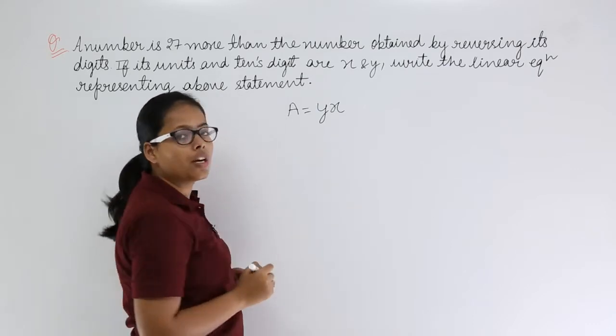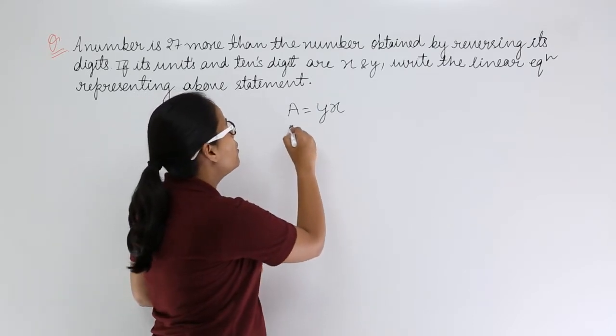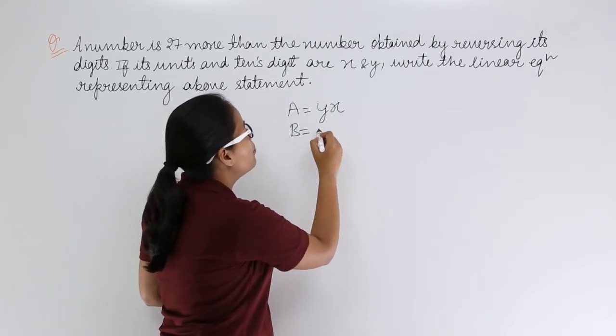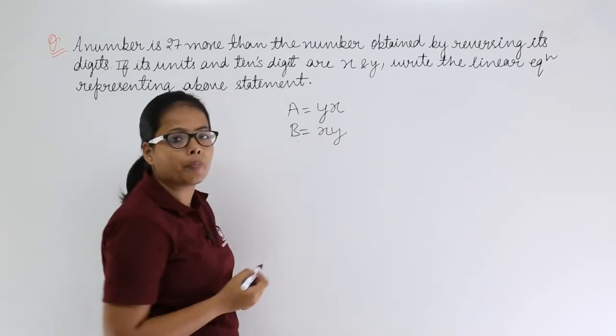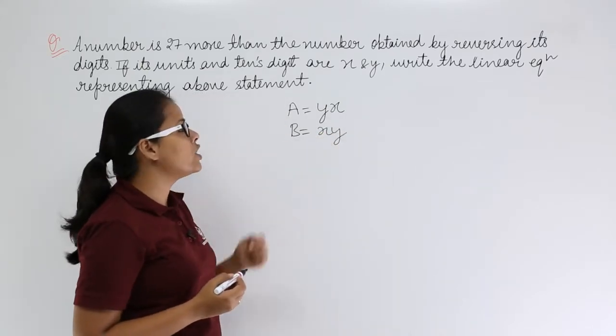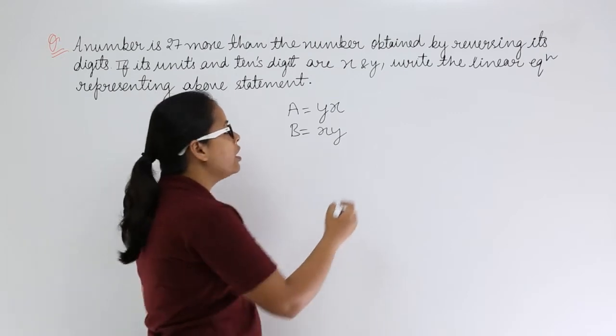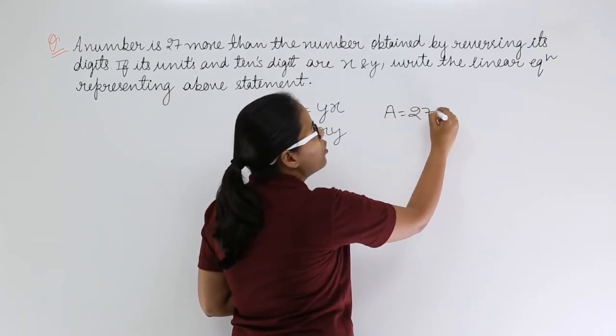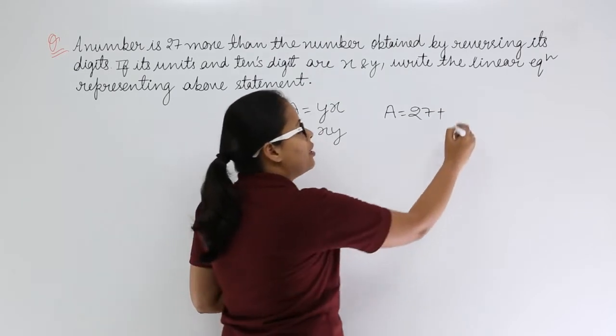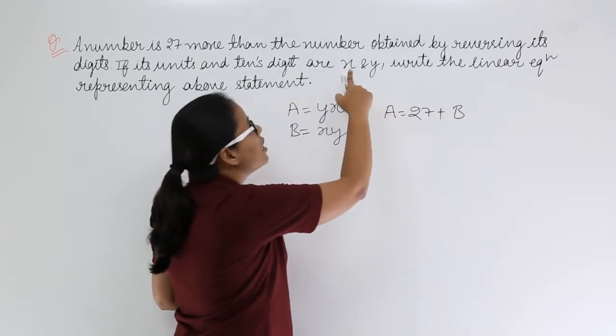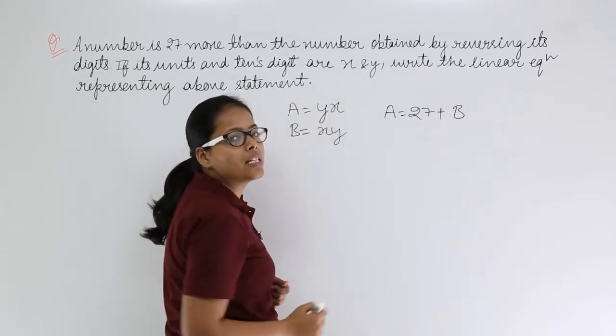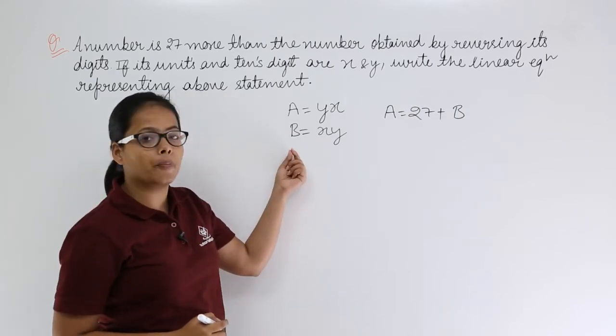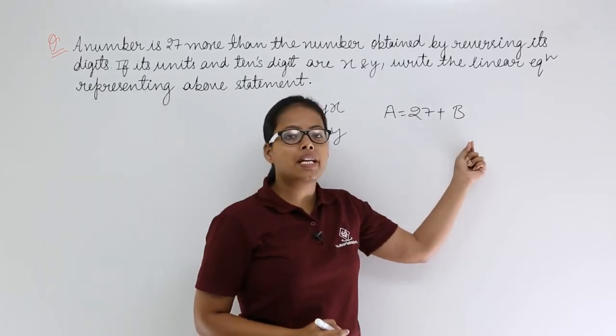So here this is your number. Now when you will reverse it, then this will become x and y. Now what are the conditions applied on A and B? It has been told that A is 27 more than B, because the number obtained by reversing its digit is B here.